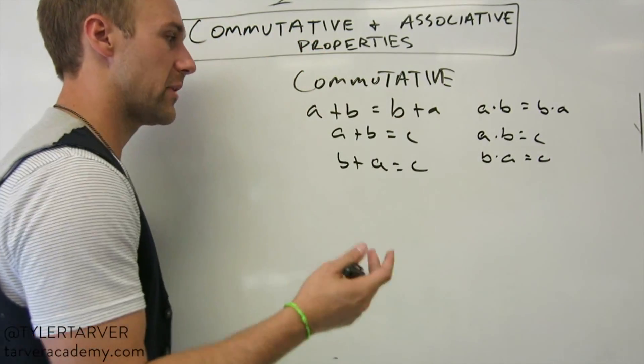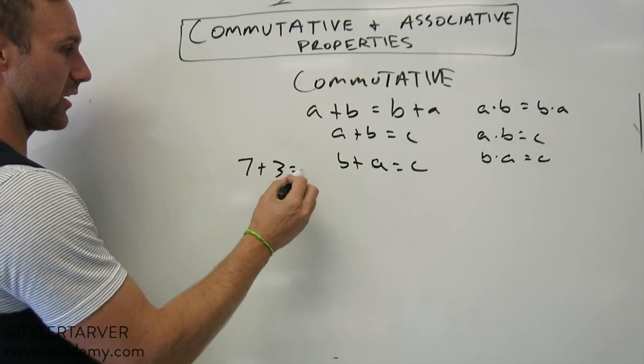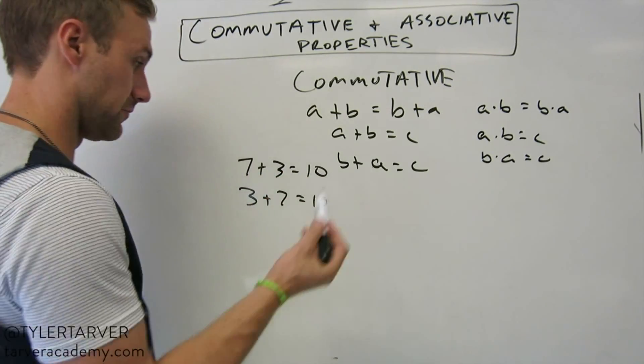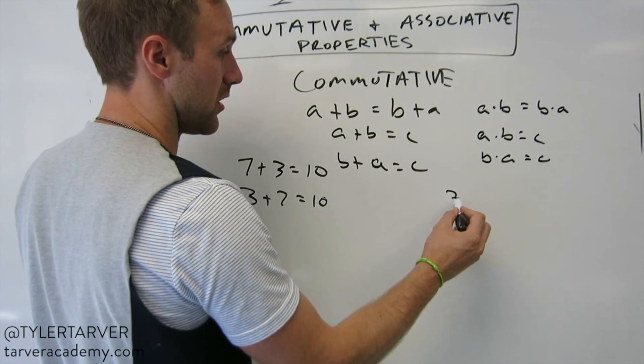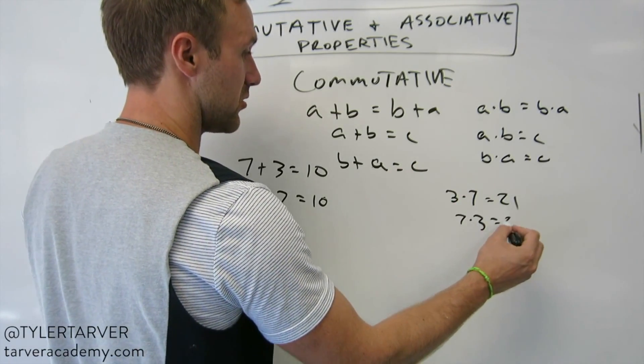Commutative property means that, for example, 7 plus 3 equals 10, right? I can do 3 plus 7 and that's gonna equal 10 as well. Same thing with multiplication: 3 times 7 is 21, 7 times 3 is 21.